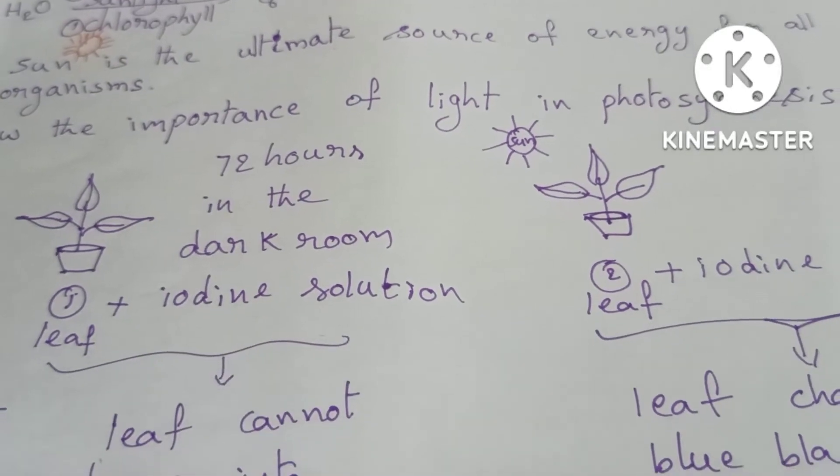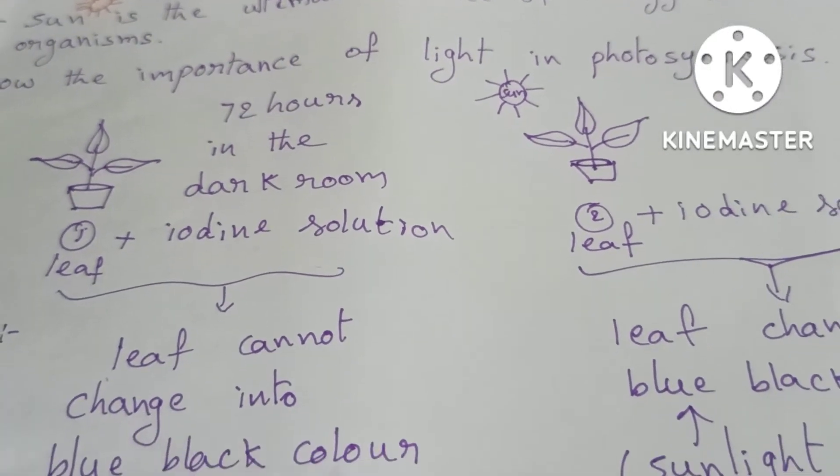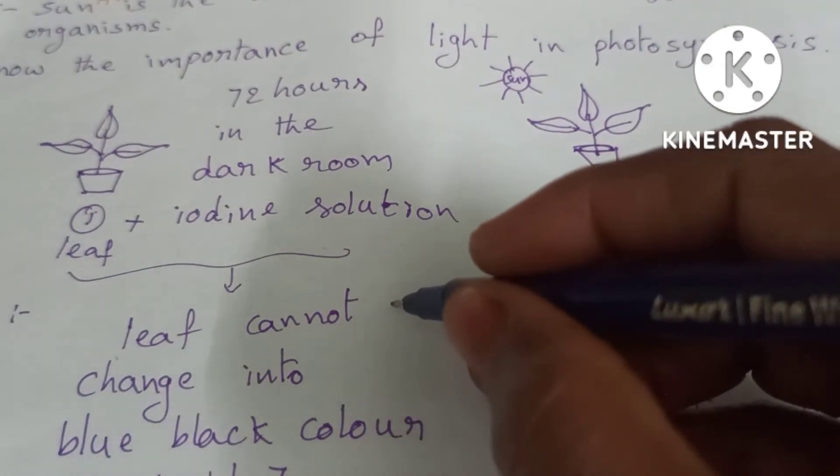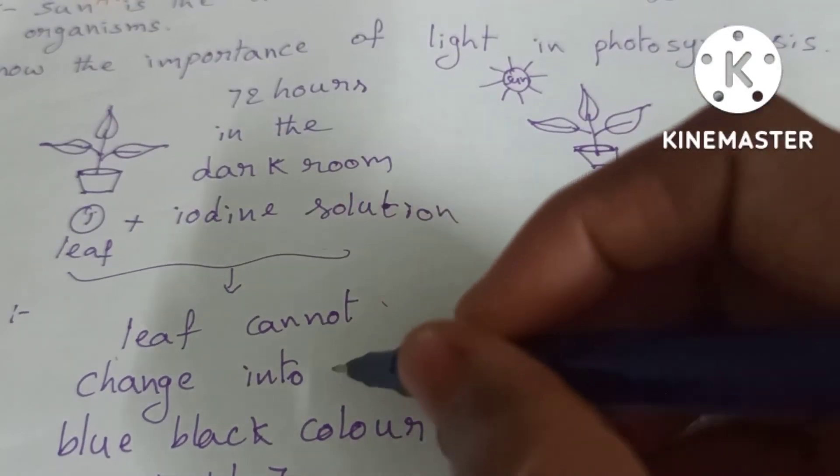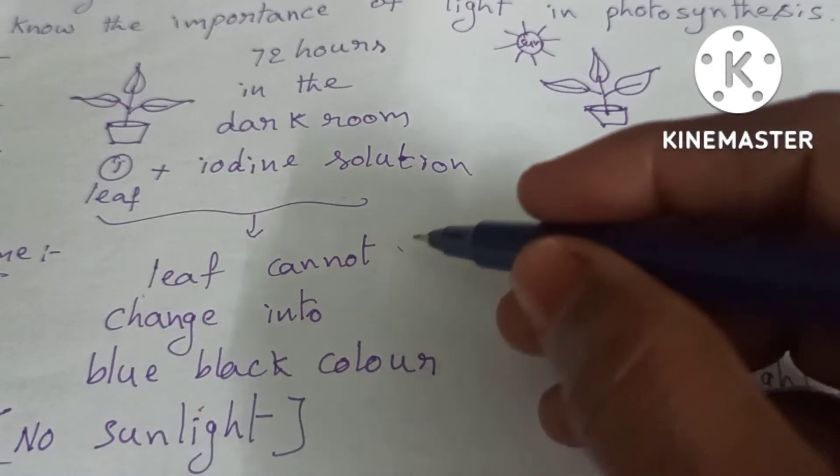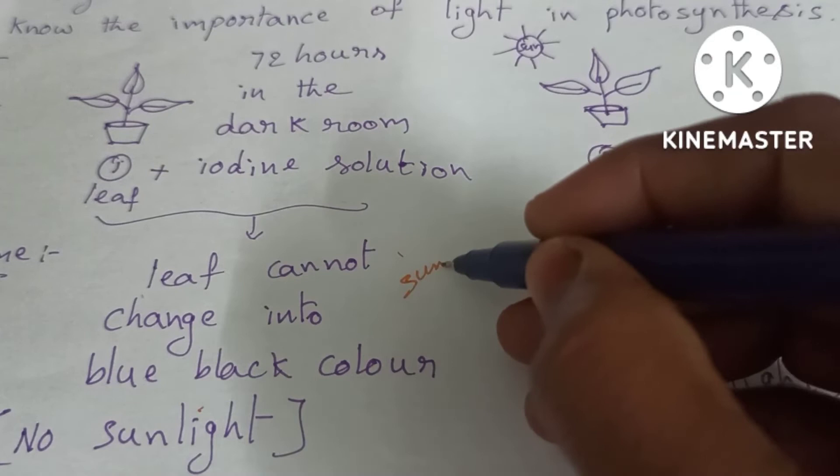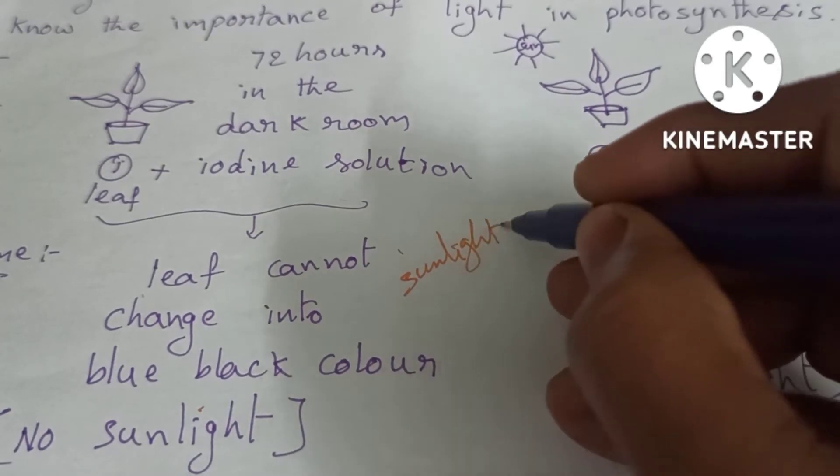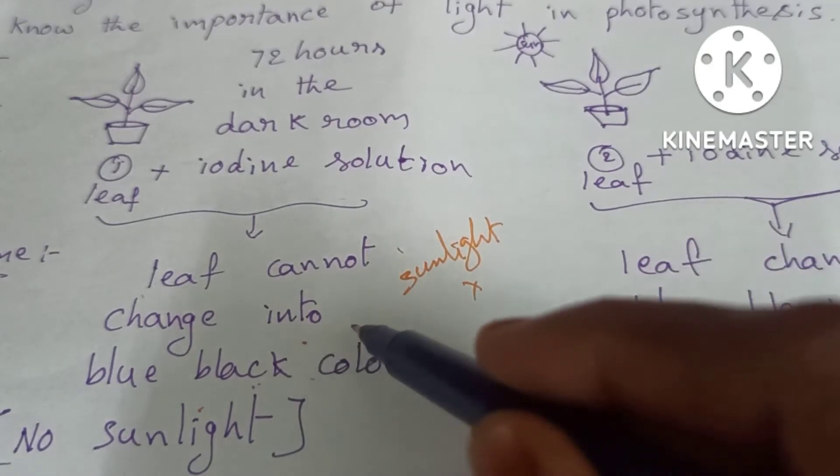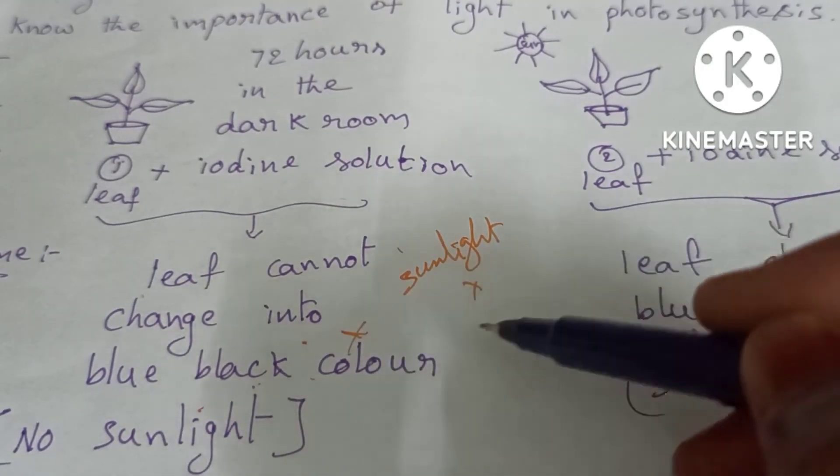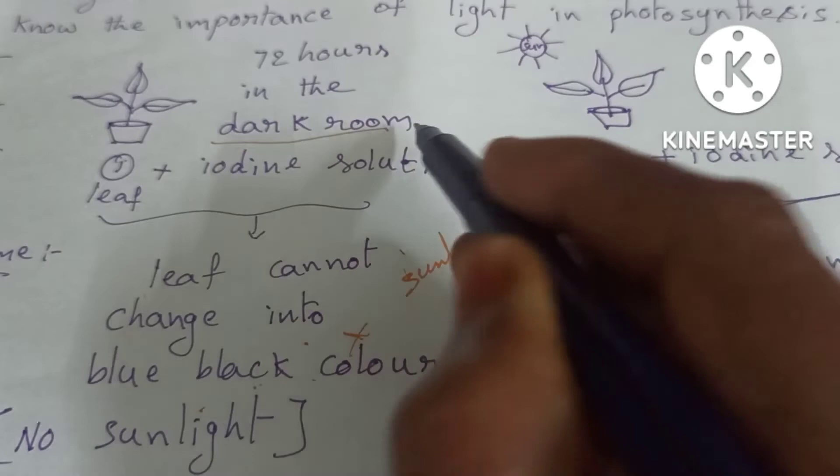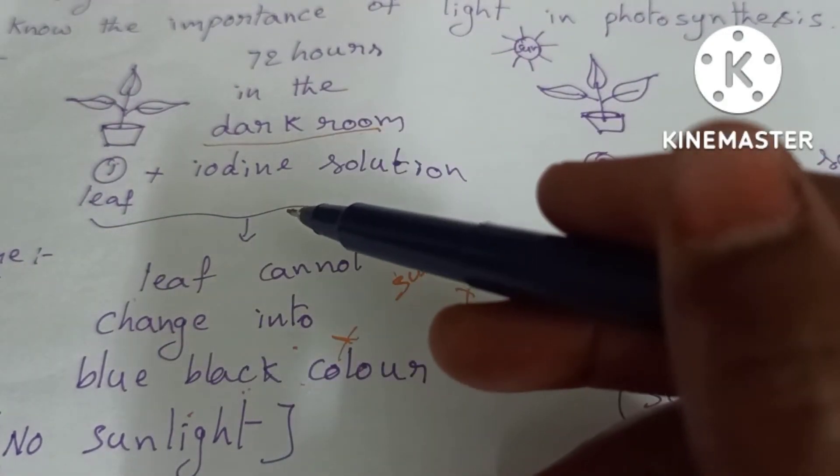The first leaf, after adding iodine, cannot turn into blue-black color. We know from earlier that if photosynthesis occurs, it turns blue-black. But here the sunlight is absent because it was kept covered in a dark room, so it cannot turn blue-black color. It cannot do photosynthesis because it was kept in the dark room, but it can still live.